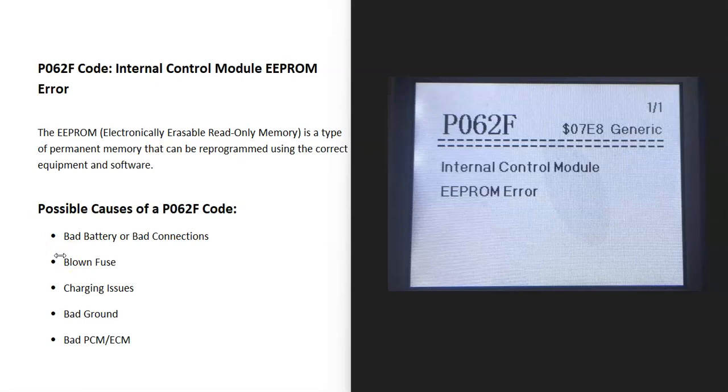And so what is a P062F code? Well, it's an internal control module EEPROM error. And what does this mean?